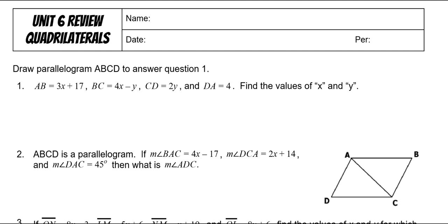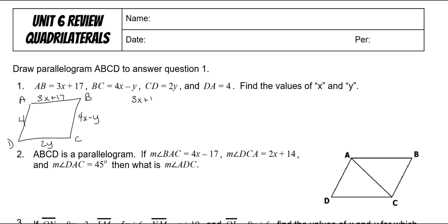First of all, it says draw a parallelogram ABCD. AB is 3X plus 17, BC is 4X minus Y, CD is 2Y, and DA is 4. We will not have system problems on your test, but it's always a good idea to practice them. Remember, opposite sides are congruent on all parallelograms, so you set the opposite sides equal to each other.